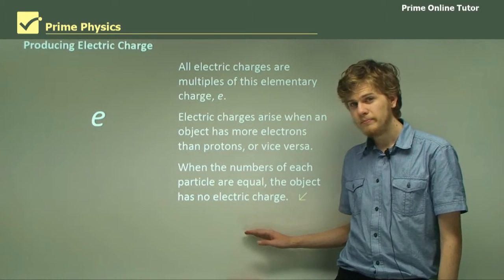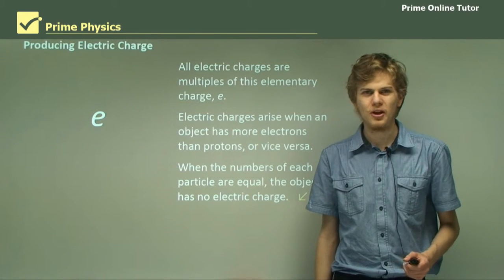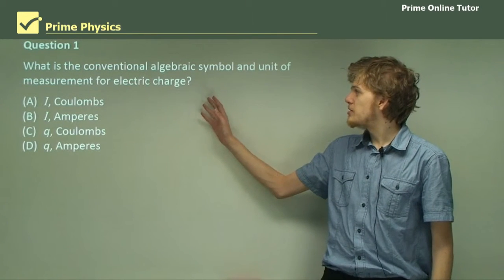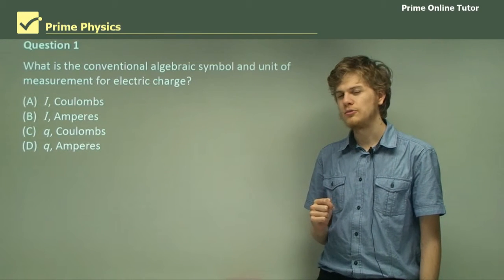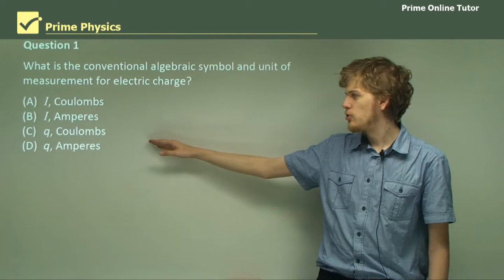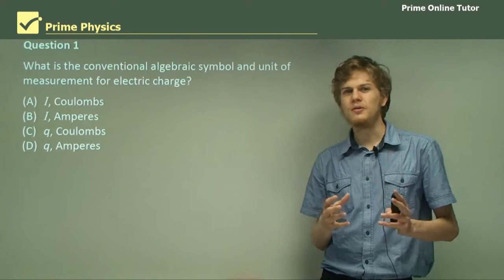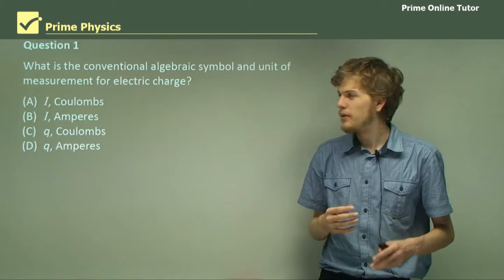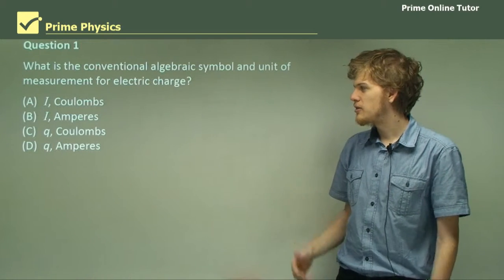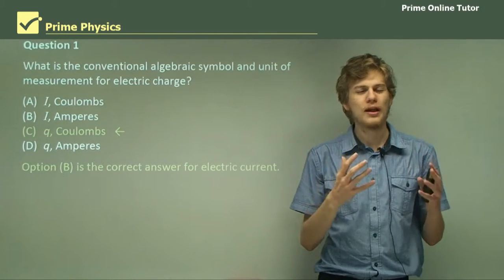That's the end of the theory — we've learned a bit about electric charge and electric current. Let's go on to some questions. Question 1: What is the conventional algebraic symbol and unit of measurement for electric charge? Is it i and coulombs, i and amperes, q and coulombs, or q and amperes? One of these measures electric current and one measures electric charge. The question is asking for electric charge, so the answer is C. We measure electric charge in coulombs and represent it with a lowercase q.